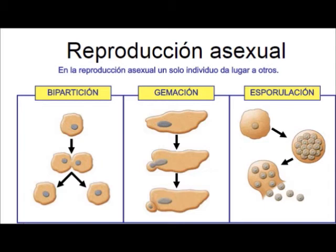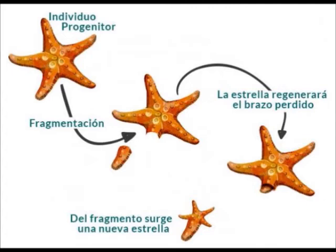Fragmentation is typical of plants, where an adult fragments into two identical adults, which in turn generate more new individuals. Regeneration is the case of echinoderms: if a partition is produced — for example, if an arm is removed from a sea star — given sufficient time, the sea star regenerates that arm, and the removed arm regenerates an entirely new sea star. This occurs especially in adverse conditions.